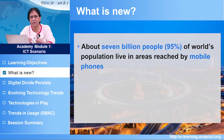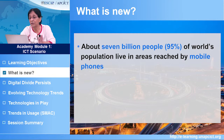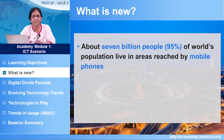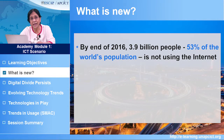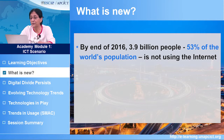So what is new about these technologies? First of all, 7 billion people of the world's population live in areas covered by mobile phones — this could be in the far corners of the Pacific or in the dense cities of India and China. Mobile broadband networks, 3G third generation or above, reach 84% of the global population, but only 67% of the rural population. By the end of 2016, 3.9 billion people — that is 53% of the world's population — is still not using the internet.